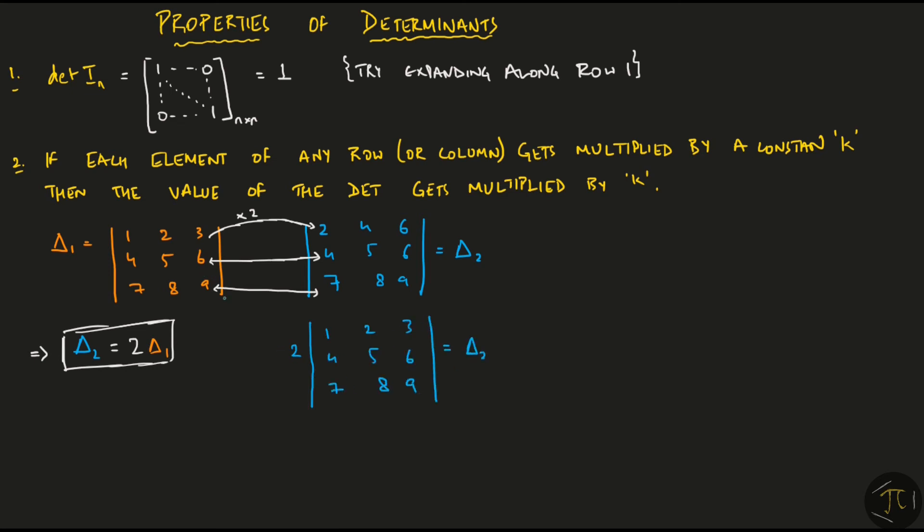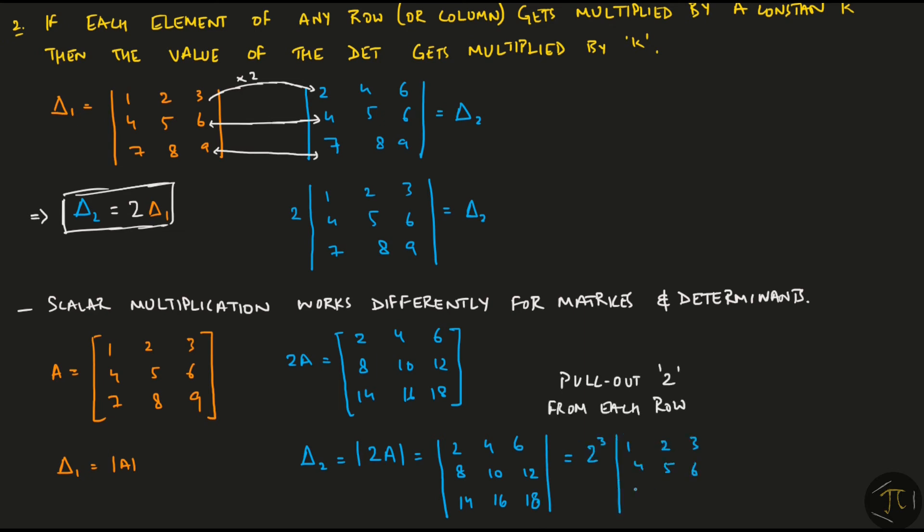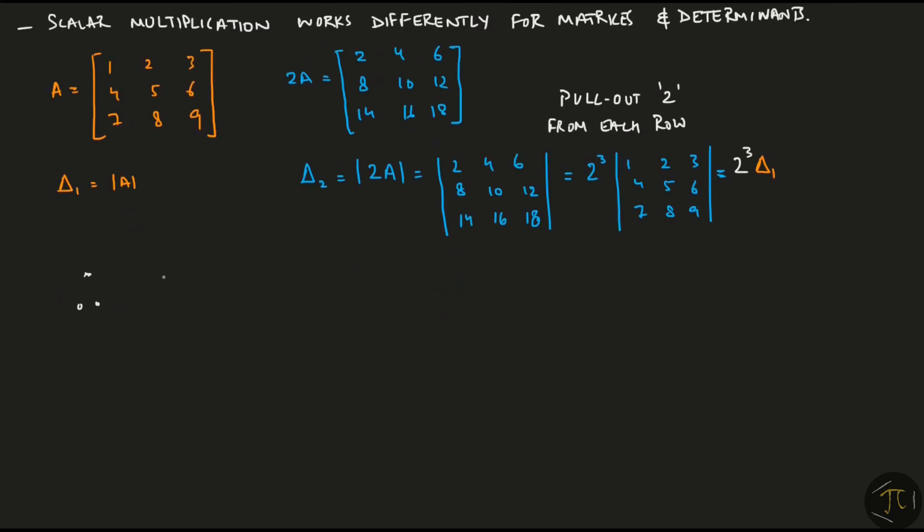So you can say that scalar multiplication works differently for matrices and determinants. Given this matrix A, 2a would have each and every element multiplied by 2. I am interested in the relationship between the determinants of these two matrices. Delta2 is the determinant of 2a. Now I can pull out a 2 from each row. So I get 2 to the power of 3 outside, leaving these simple rows inside. So delta2 turns out to be 2 to the power of 3 times delta1. In general, the determinant of kA is equal to k to the power of n times the determinant of A, where n is the order of the matrix.